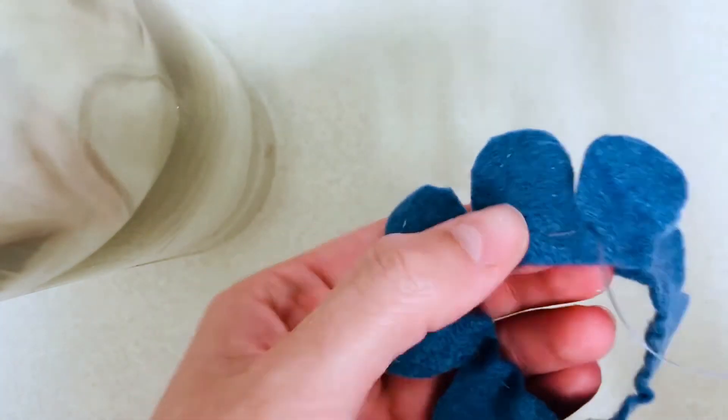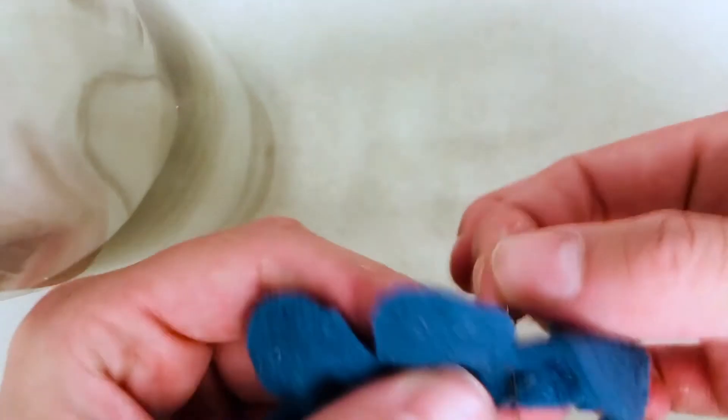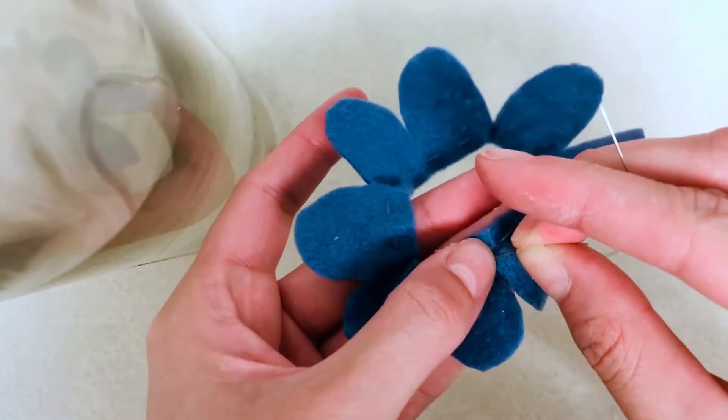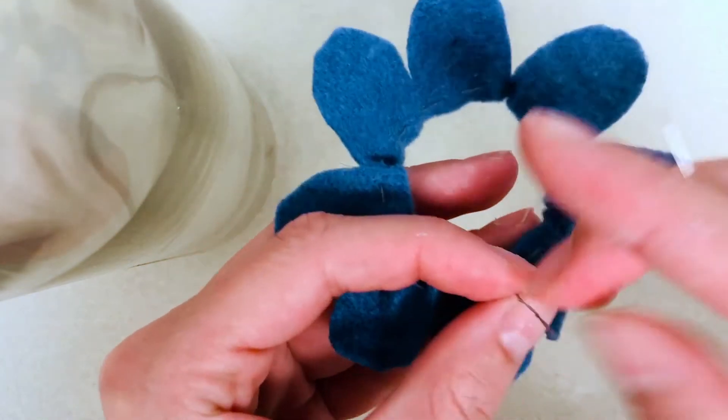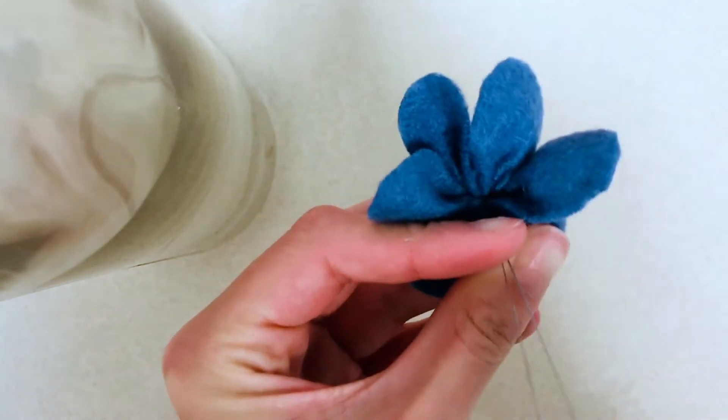Once the ends are lined up you're going to start pulling and tightening the whole petal shape. Leaving a little bit of room at the end of both ends of thread, you're going to want to meet them together and tie a knot and pull forward just like that.